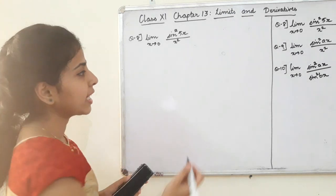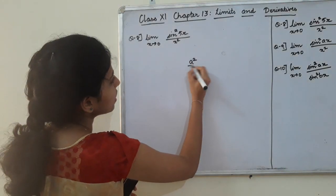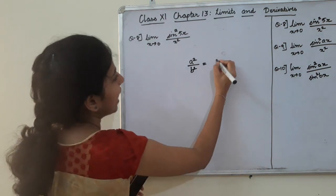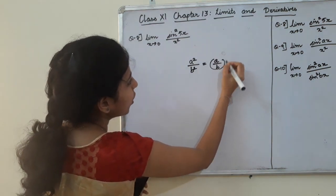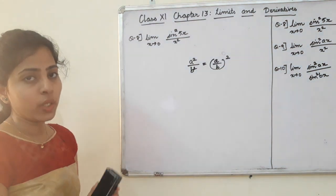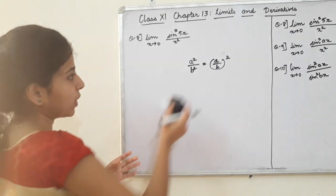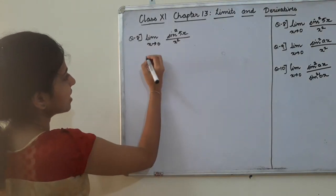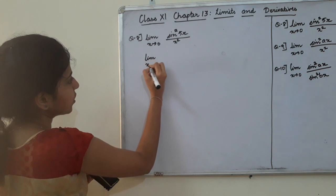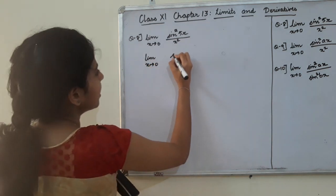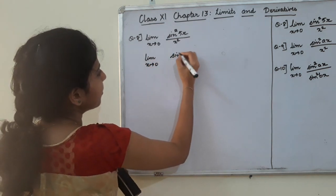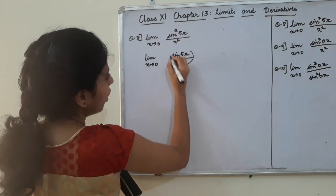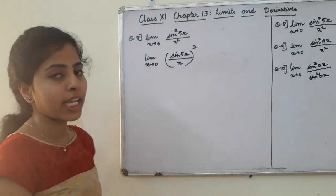Now, we will do a squared divided by b squared. A by b, the whole square is the same. Let's try this. Limit x tending to 0, here we have sin 5x divided by x, whole squared.